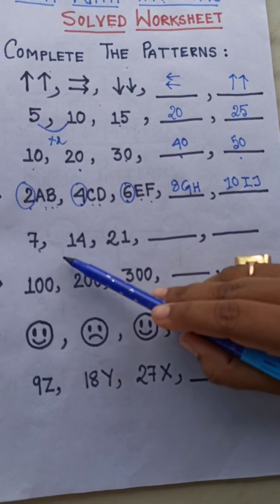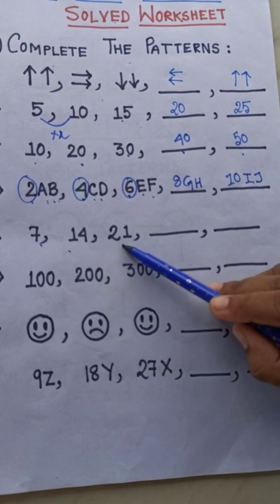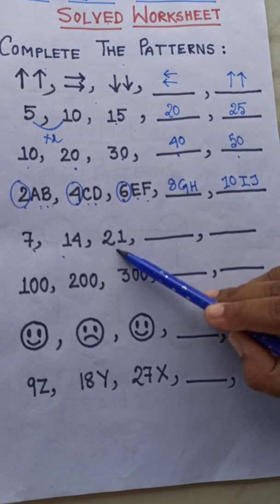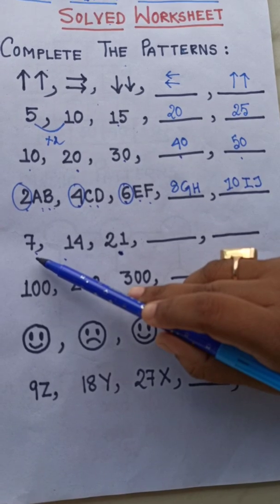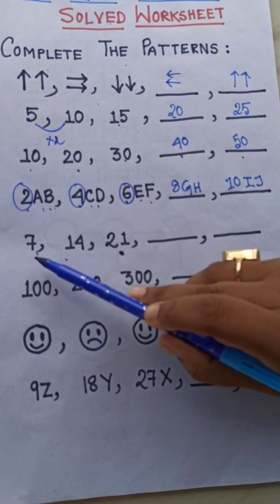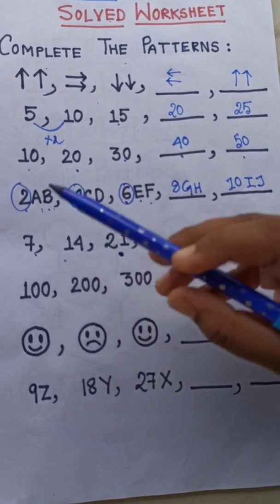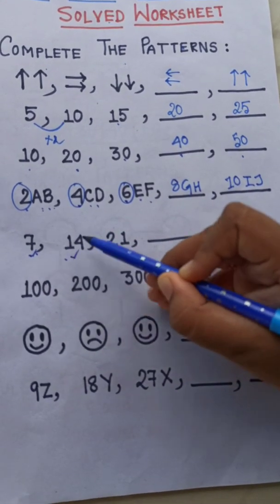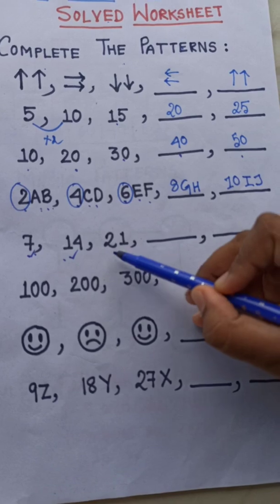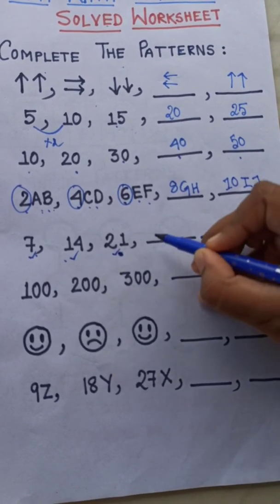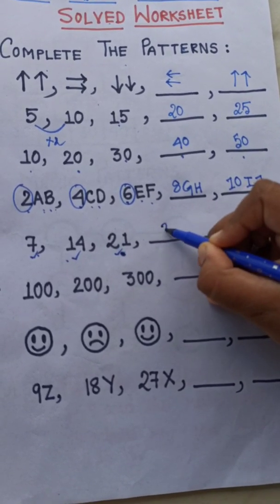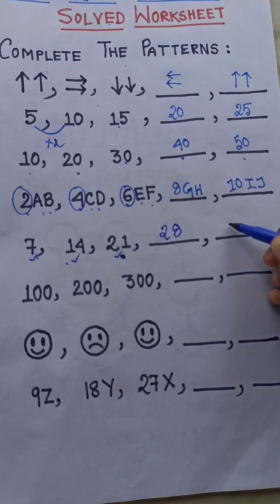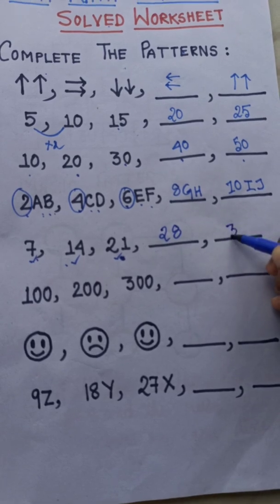Next: 7, 14, 21. You have to understand the pattern. You can easily see it is a table of 7 — 7 ones are 7, 7 twos are 14, 7 threes are 21. So next will be 7 fours are 28, then 7 fives are 35.